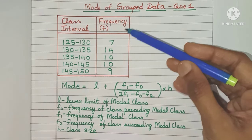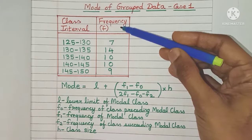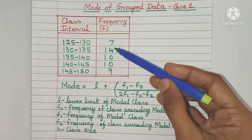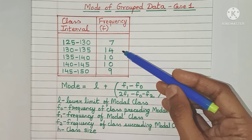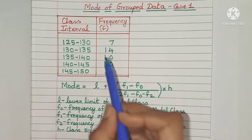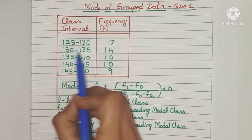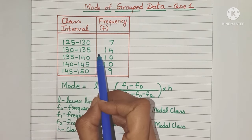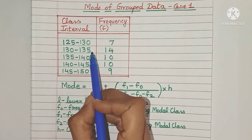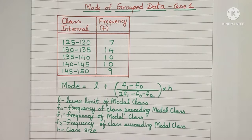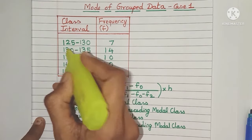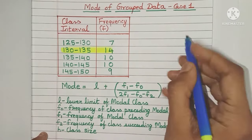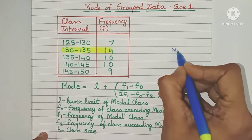Let's first find that maximum frequency from this frequency column. As you can see, 14 is the highest number, so that is the maximum frequency and it lies in the class interval 130 to 135. That means our mode value will also lie in the same class interval. Let's highlight this class interval — this is called the modal class.